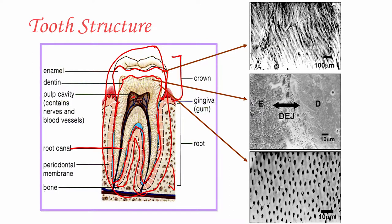The crown of the natural tooth contains enamel and part of the dentine, whereas the gingiva is the gum and the root part of the natural tooth largely contains the pulp cavity, bone, and dentine. We do not see any bone in the crown part, which contains all of the enamel and some part of the dentine.